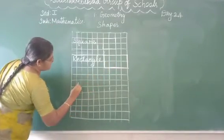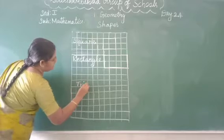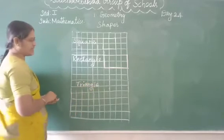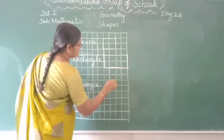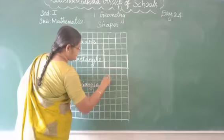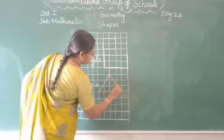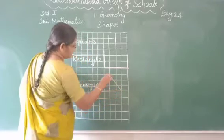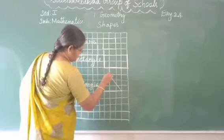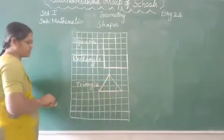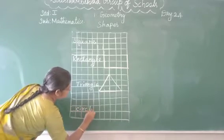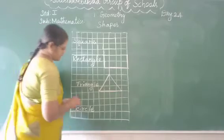Next. Triangle — T, R, I, A, N, G, L, E. Triangle. Okay. Next. Circle — C, I, R, C, L, E. Circle.